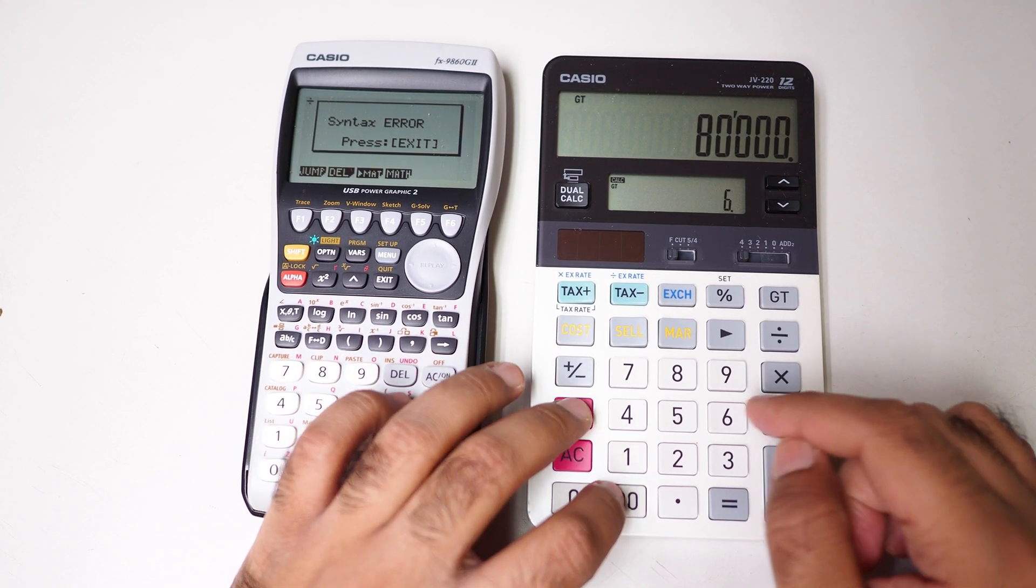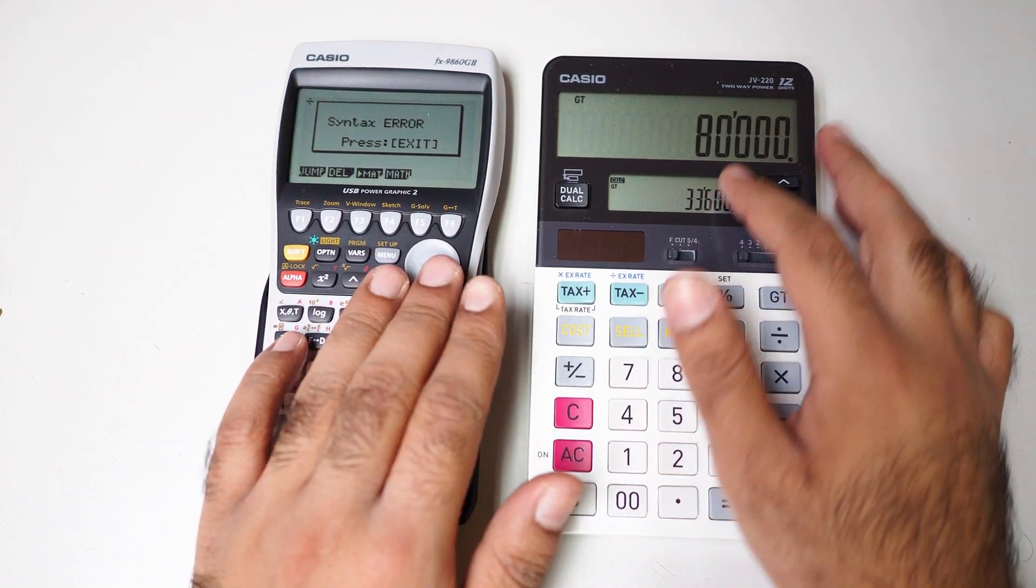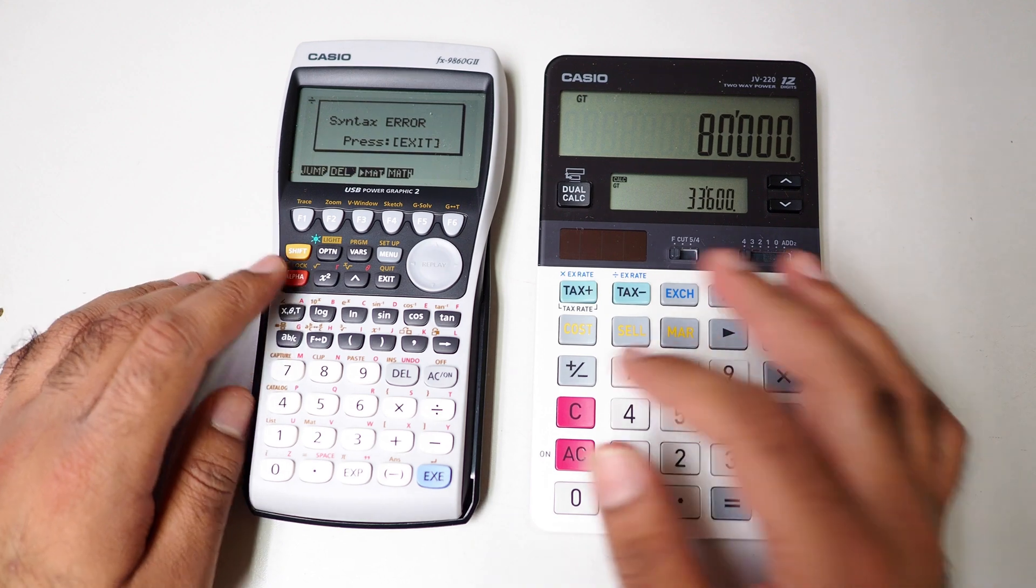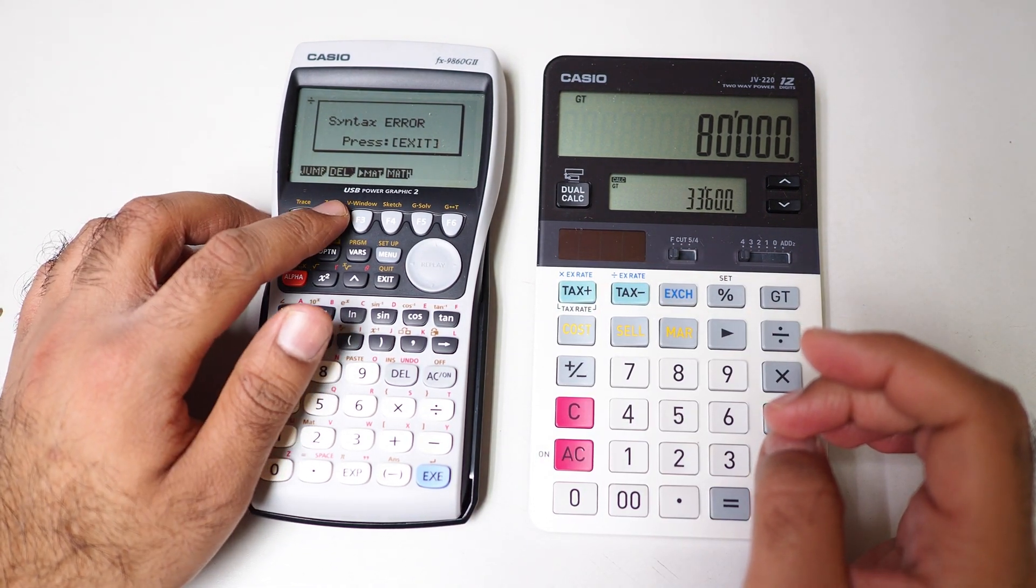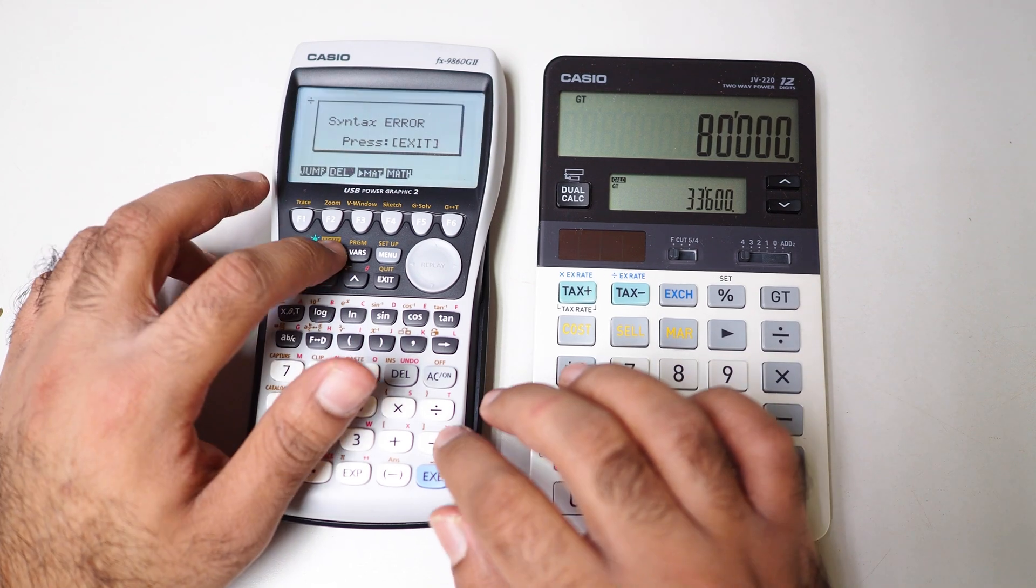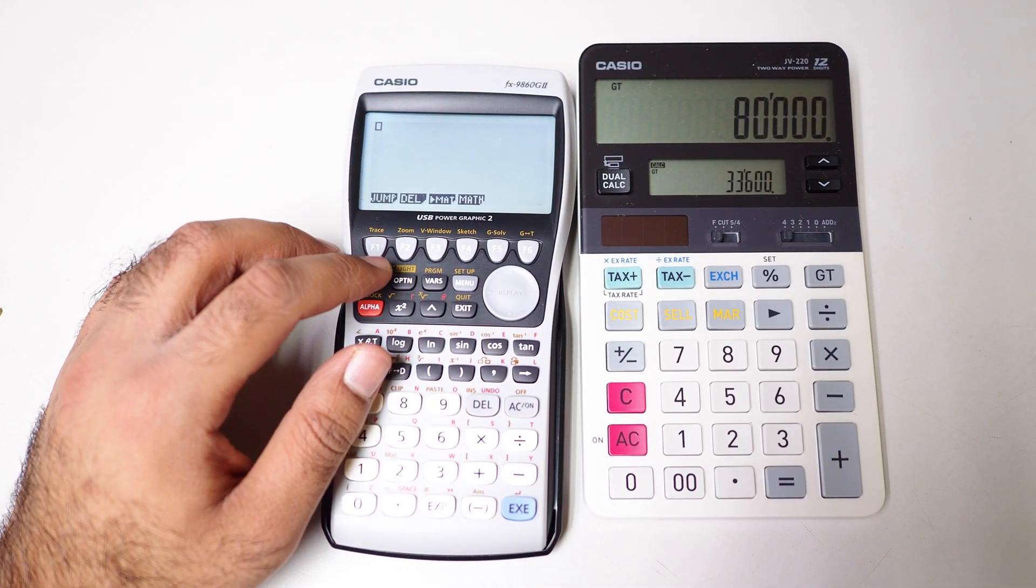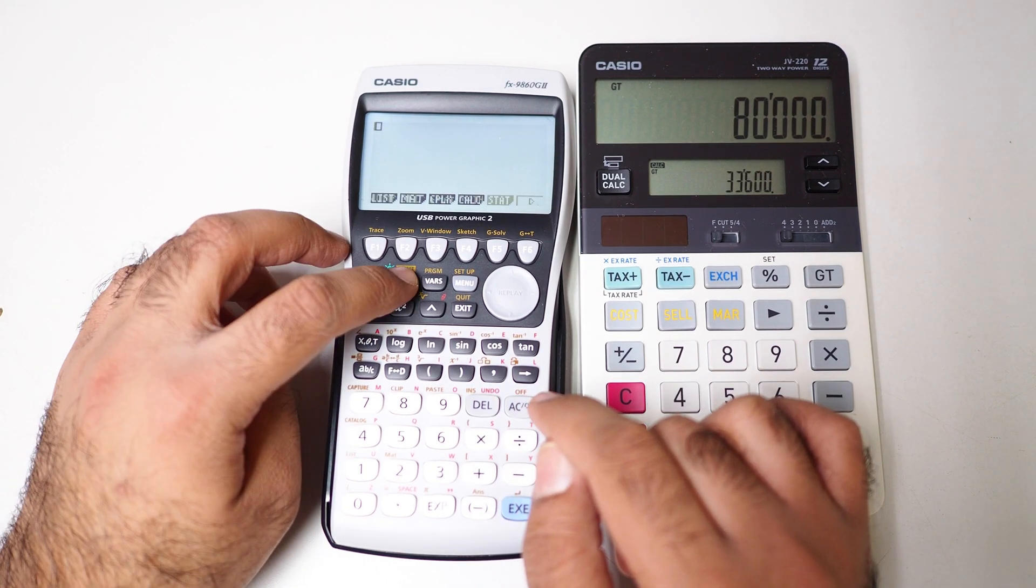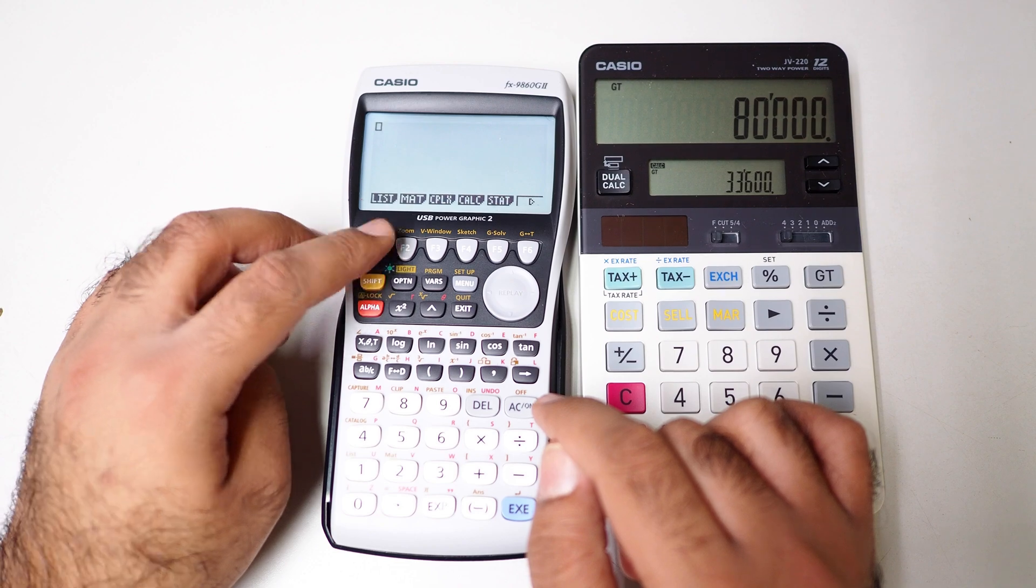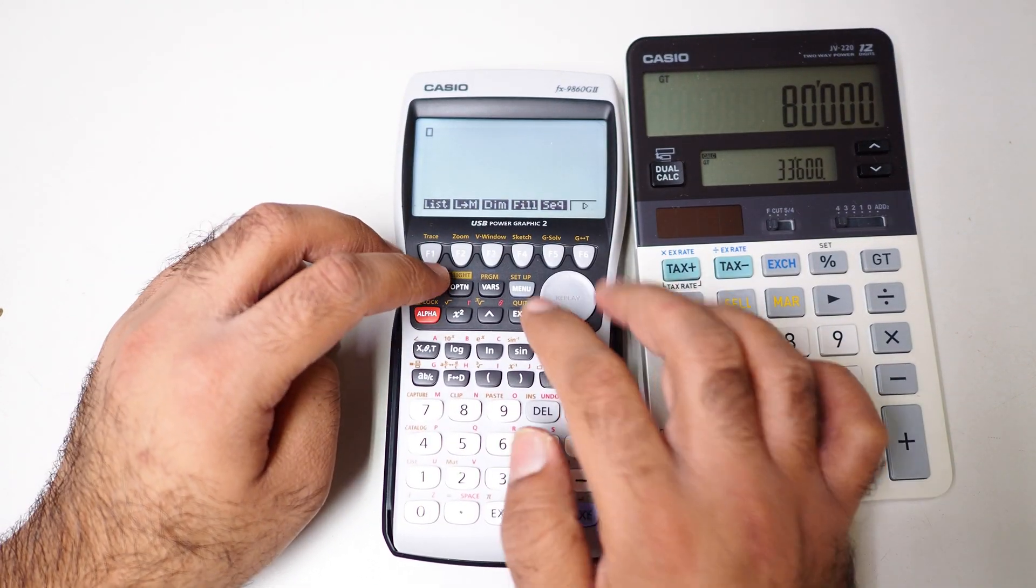Yeah, I can do a new calculation, 600 times 56, or I can plus 2. So this is a function of dual calculation. So let me now focus on this one.